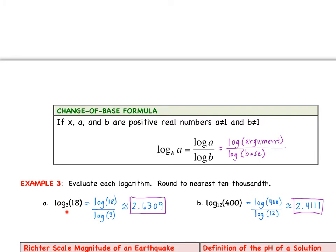For example, to evaluate log base 3 of 18, we apply the change of base formula: log of 18 over log of 3. On your calculator, use the log button next to the number 7. You should verify that you get approximately 2.6309. For part B, using the same approach — log of the argument over log of the base — verify that you get 2.4111.